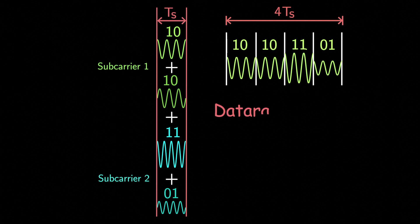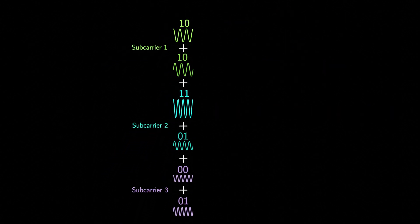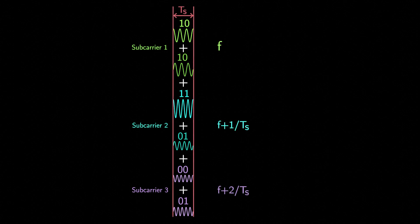In other words, our data rate is increased by four times in this example. We can increase data rate even further by adding more subcarriers. Subcarrier frequencies are closely spaced, with adjacent subcarriers separated by an interval of one over TS, where TS represents the symbol duration. In other words, adjacent subcarrier has an additional cycle within the symbol duration.